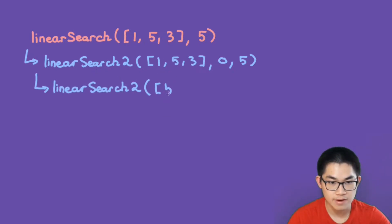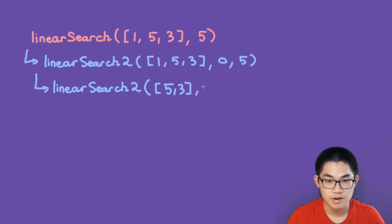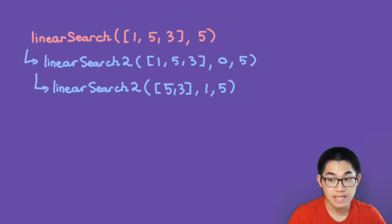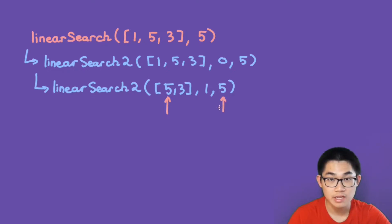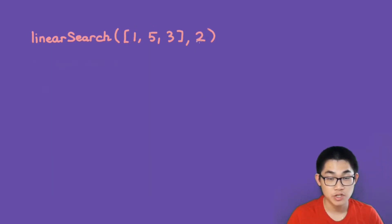It calls on itself again and moves on to the next element — number five here. Because we move to the next number, we increment the index to one. Currently we're at index one, and the target number five stays the same. The first element of our list is now the same as our target, so we return the index we're at, which is one. It goes up the tree and the result is one, which makes sense because number five is at index one.